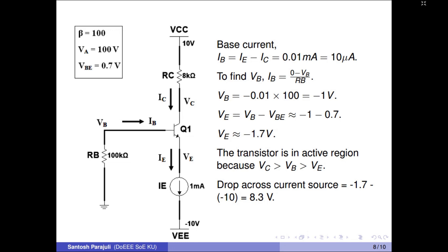The emitter potential is computed as minus 1.7 volts. The transistor is indeed in the active region because the collector node potential is 2 volts, the base node potential is minus 1 volt, and the emitter node potential is minus 1.7 volts. The potential difference across the current source is higher potential minus lower potential: minus 1.7 volts minus minus 10 volts, which equals 8.3 volts.